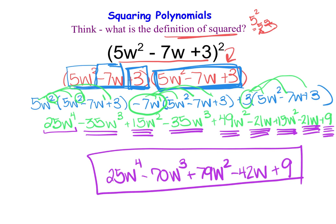So if we are squaring a polynomial, we multiply it times itself and then use our multiplication strategies to multiply that out.